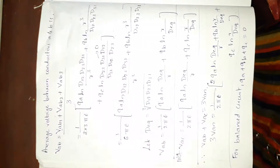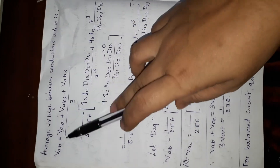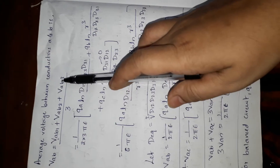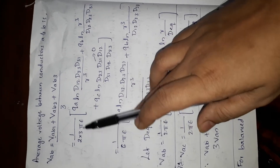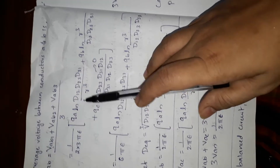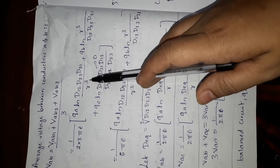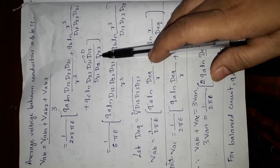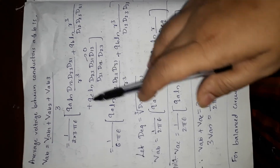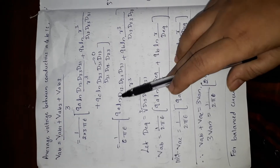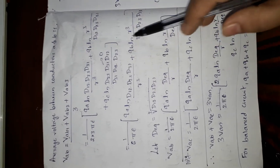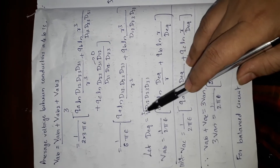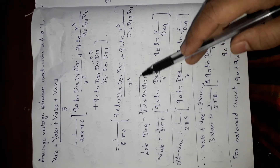All three equations are handled similarly as done for inductance — you take the average of all three. V_ab equals the sum of first, second, and third position expressions divided by 3. Taking 1/(2πε) as common: qa times ln(d12·d23·d31 / r³) plus qb plus qc terms — where numerator and denominator cancel, giving ln(1) = 0. So that term goes to zero.